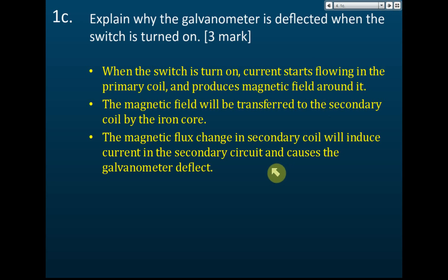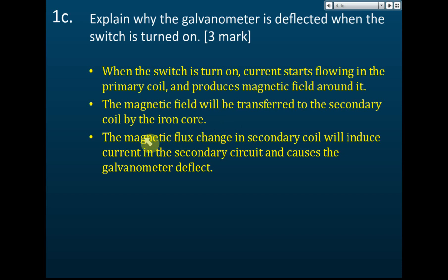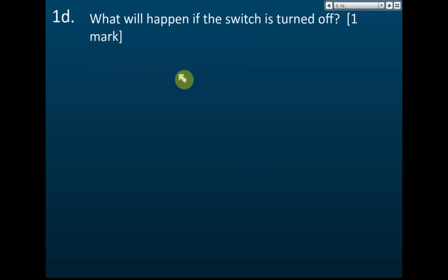So the three key points are: first, when the switch is on, current flows and magnetic field is produced; second, the magnetic field is transferred to the secondary coil; third, the changing magnetic flux is cut by the secondary coil, inducing current in the secondary circuit and causing the galvanometer to deflect.